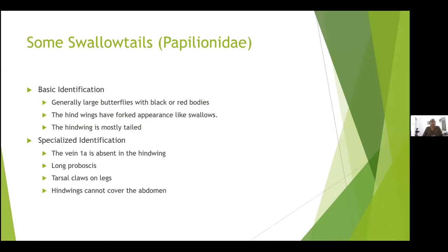I'll come to the swallowtail identification first. These butterflies are bigger and larger in size in Western Ghats specially. All the specialized indicators say the vein 1A is absent in the hindwing — these swallowtails have no 1A vein in the hindwing. They have long tarsal claws on the legs. The hindwings cannot cover the abdomen. This is the general idea of identification of swallowtails.